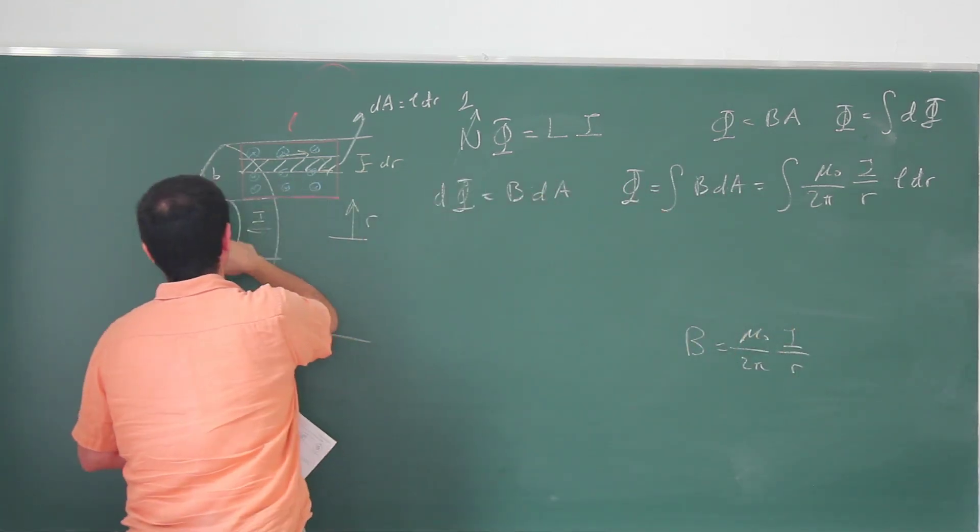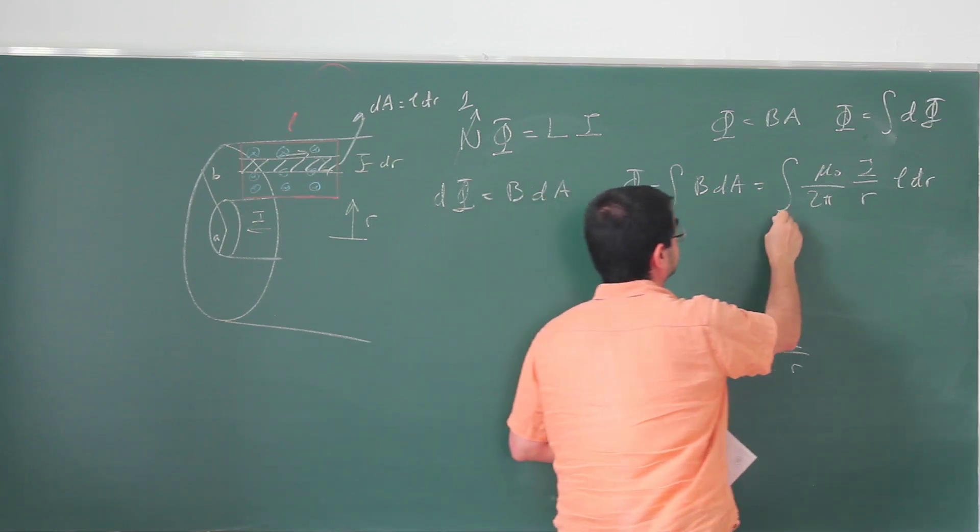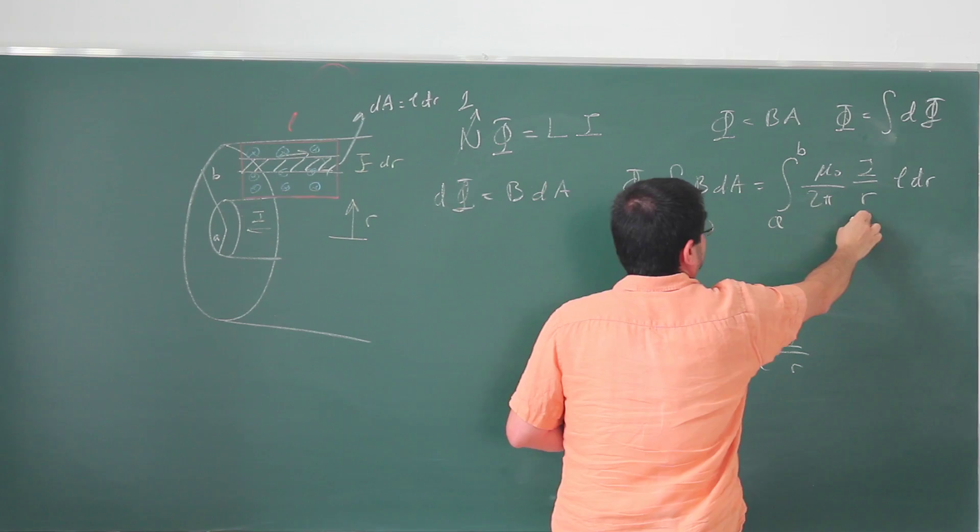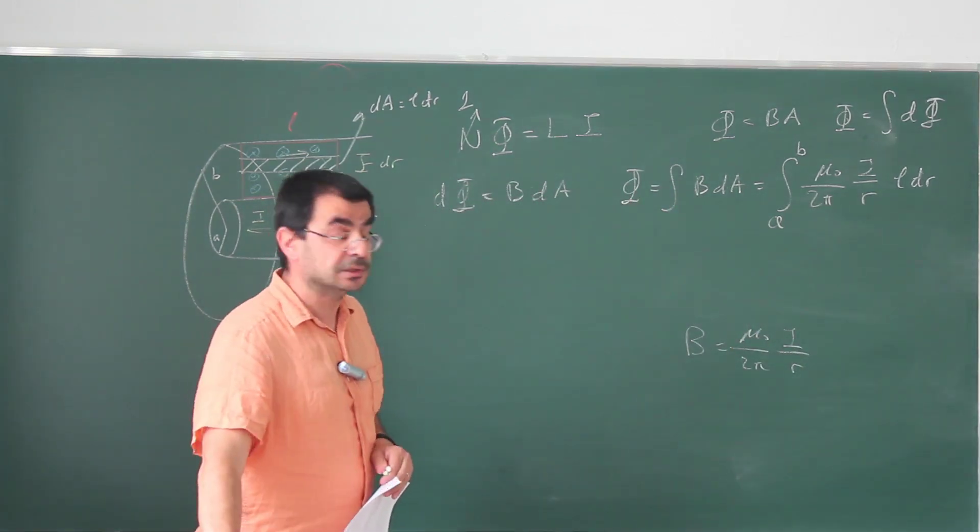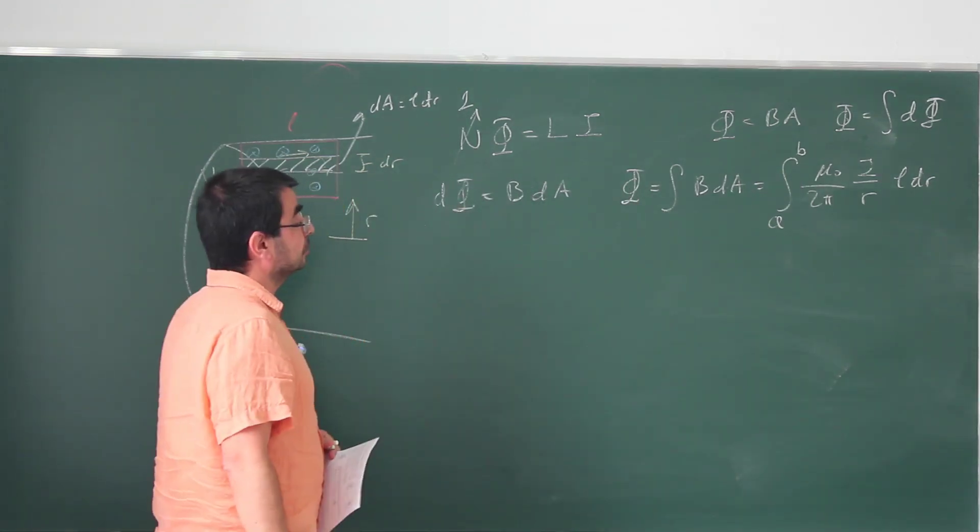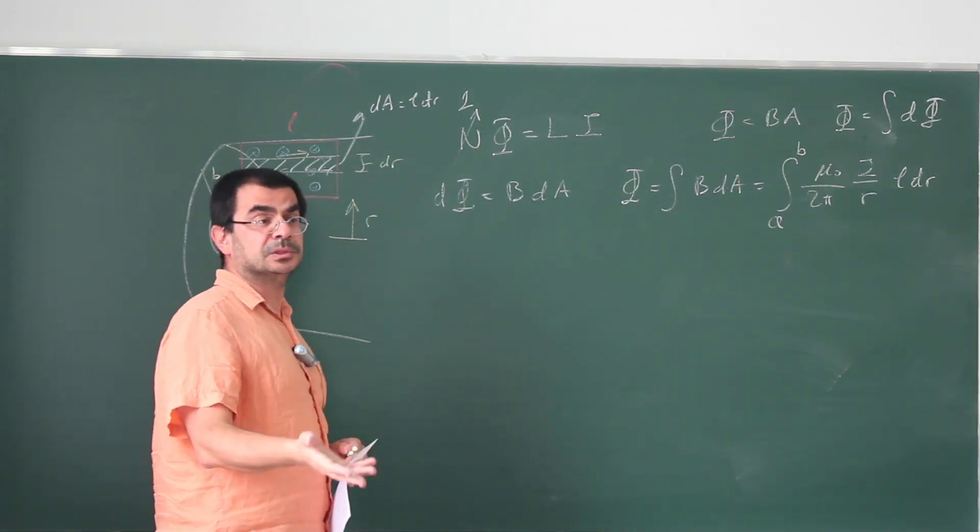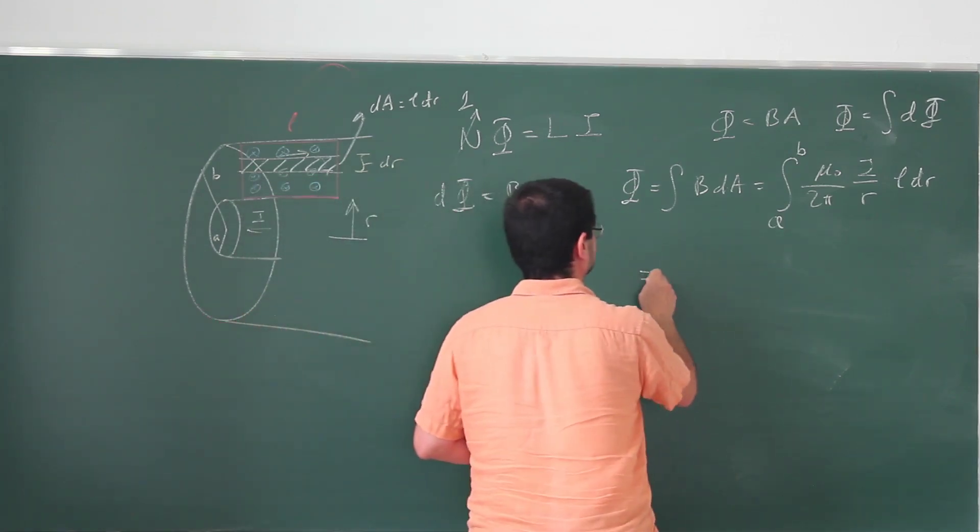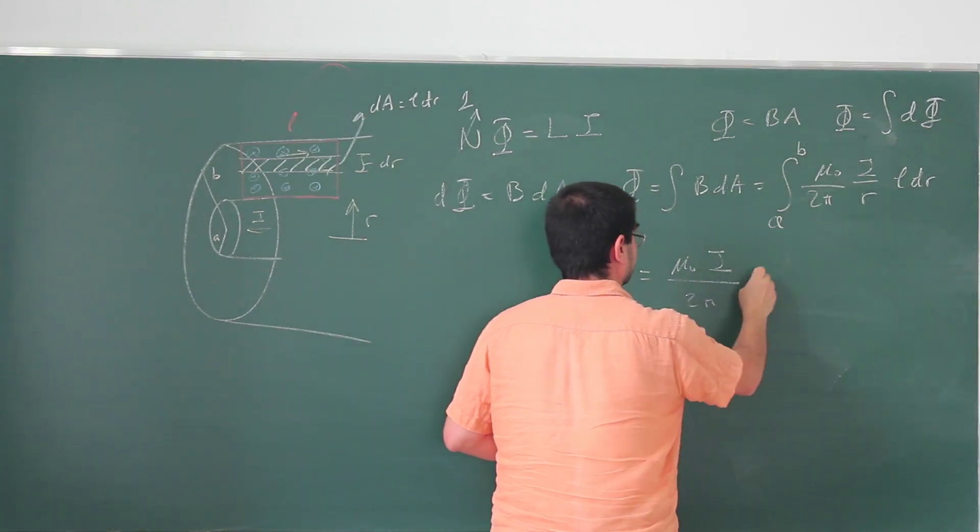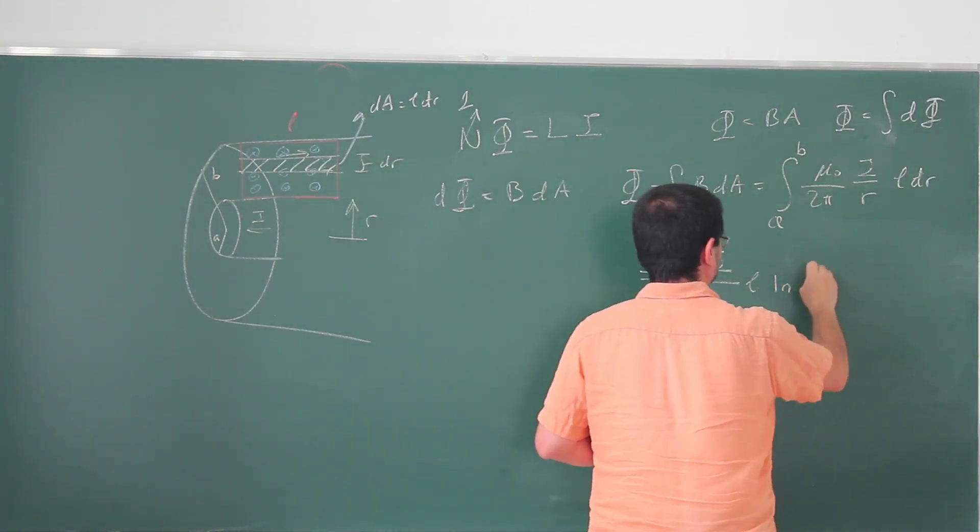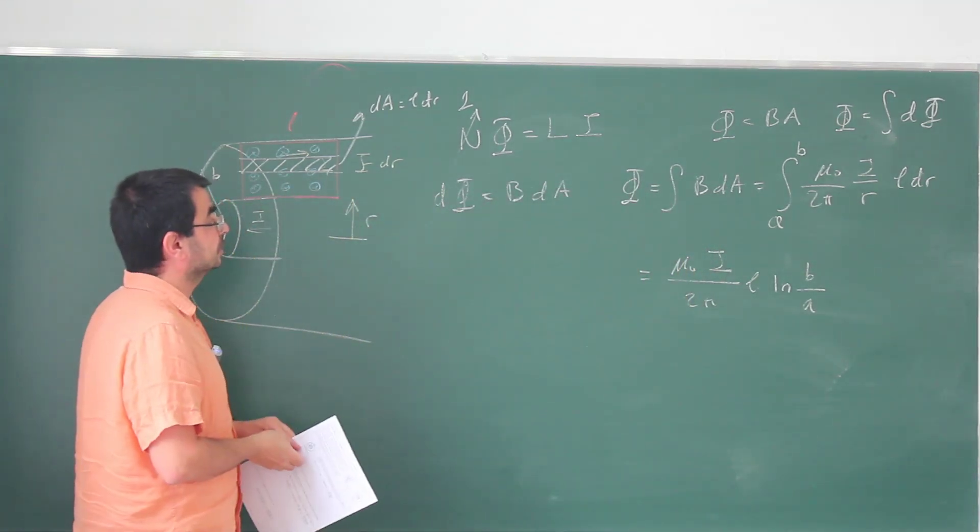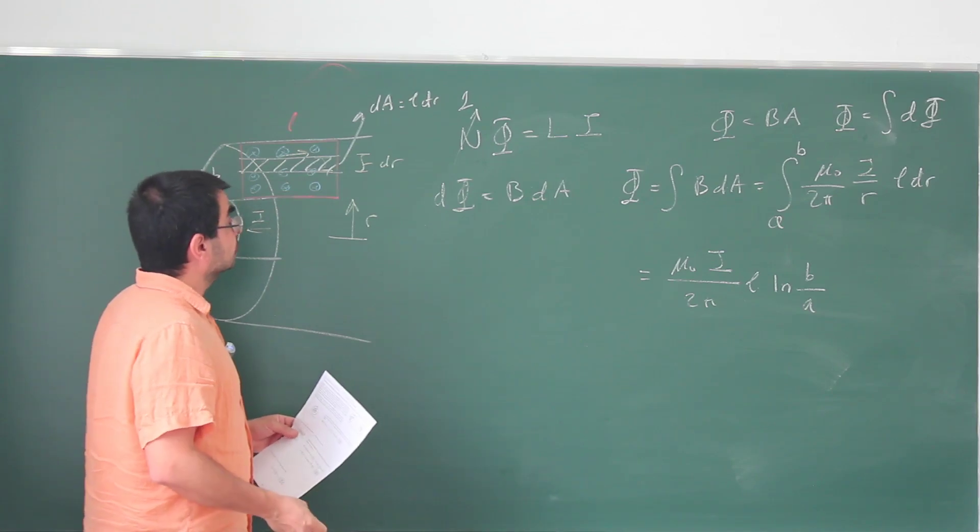But that B is mu naught over 2 pi I over R, dA is L times dR. And the limits are from A to B. These are constants. I can take them out. I'm going to have the integral of 1 over R, which is a natural logarithm. These limits are going to enter that natural logarithm. I'm going to have a difference of logarithms, which is a logarithm of ratios. So I can actually write this down directly. Mu naught I over 2 pi L ln B over A. This is something, hopefully, I've done many times at this point. So it's actually automatic.